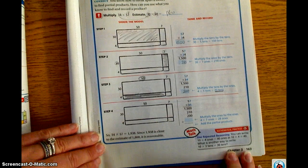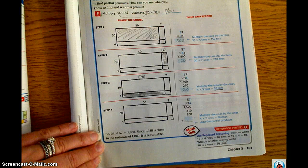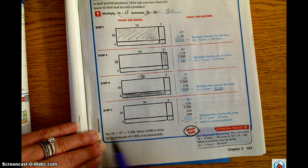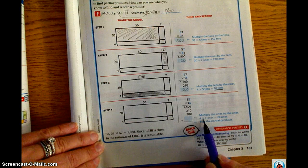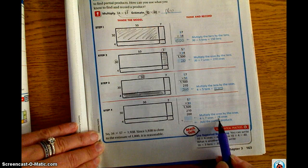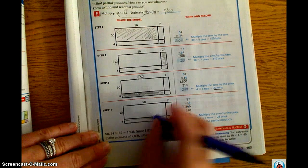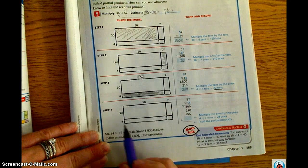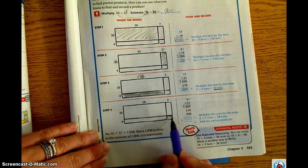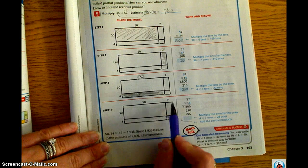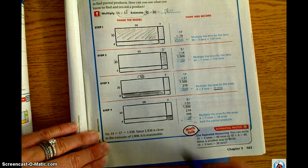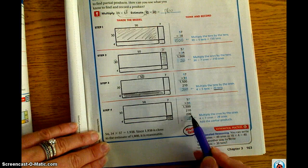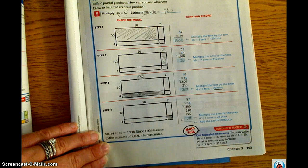And our last step of unlock the problem, step four, we are going to multiply the ones by the ones. So 4 times 7 ones equals 28. So, 4 times 7 ones, this box here, 4 times 7 ones is 28. Once we have our partial products, then we will add to get our total.